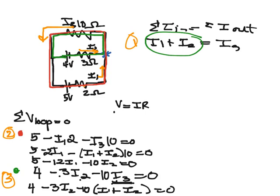And that will go ahead and become 4 minus 13 I2 minus 10 I1 equals 0.